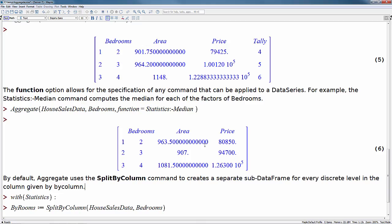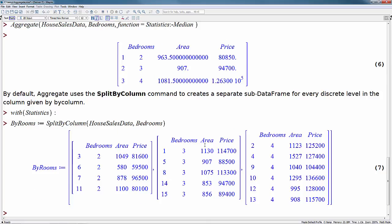Behind the scenes, the aggregate command actually uses the statistics split by column command to create a separate sub data frame for every discrete level in the column given by this by column option. To give an idea what that looks like, I'm just going to run split by column here on our house sales data by bedrooms.